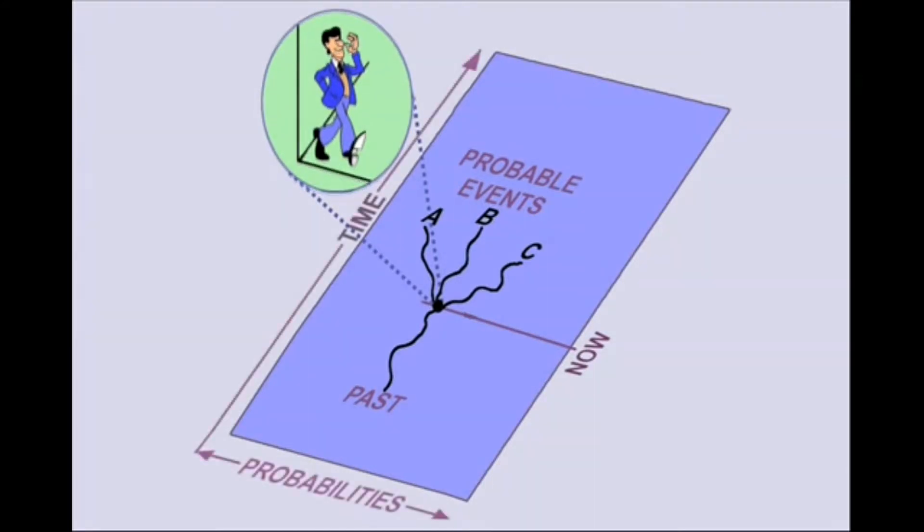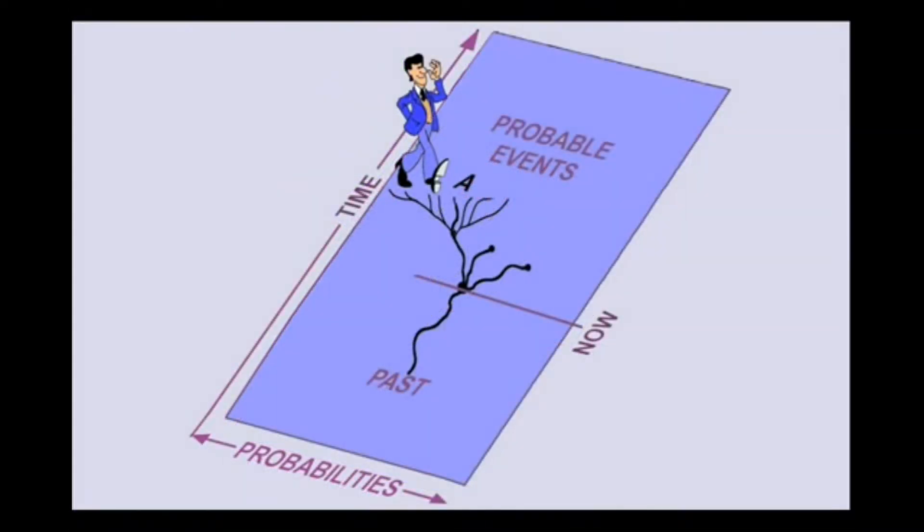As we move ahead through time, we continue to make choices in probable futures, each of which would become unique experiences. However, if there are parallel realities, all these probable future events that we choose not to experience would also exist, but beyond our awareness.